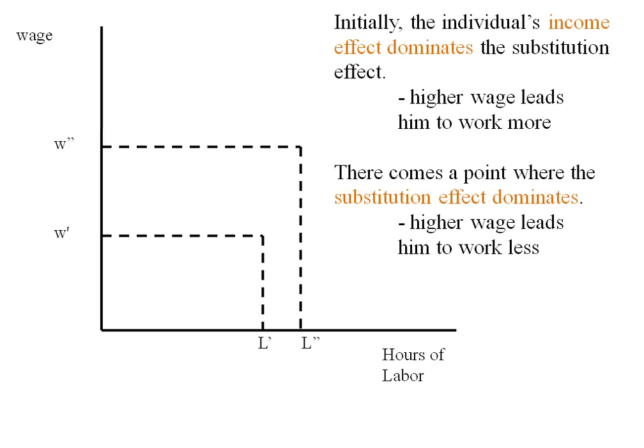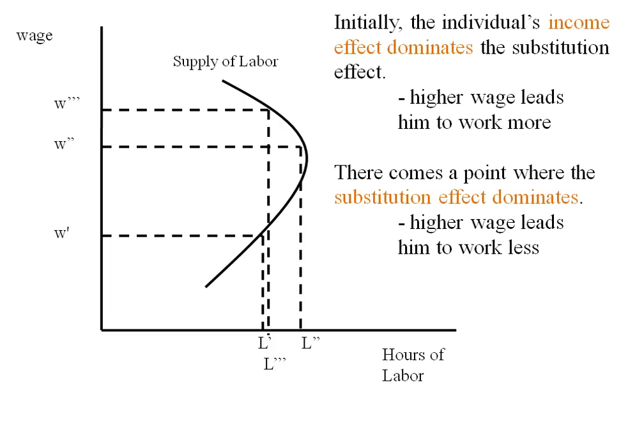Then there comes a point where this individual has enough money, and the income effect starts to dominate. Now a higher wage is actually going to lead them to work fewer hours. When we trace out these points, we get what is known as the backward bending supply of labor curve.